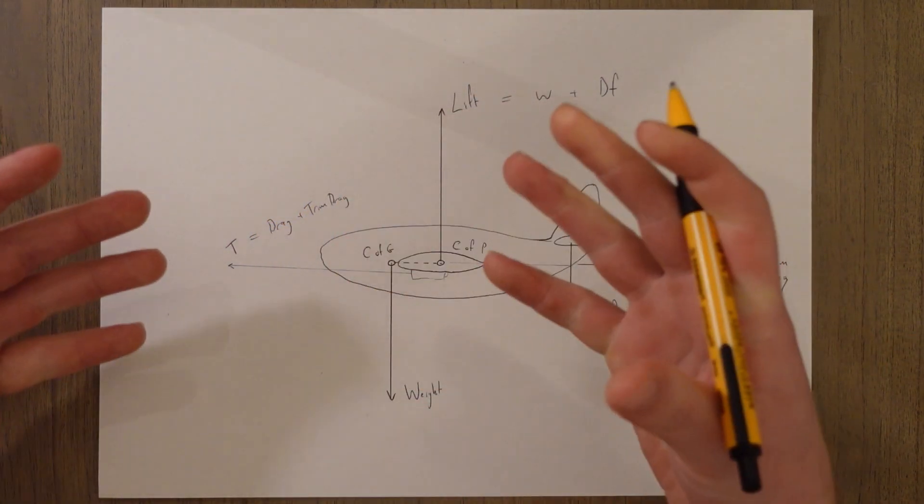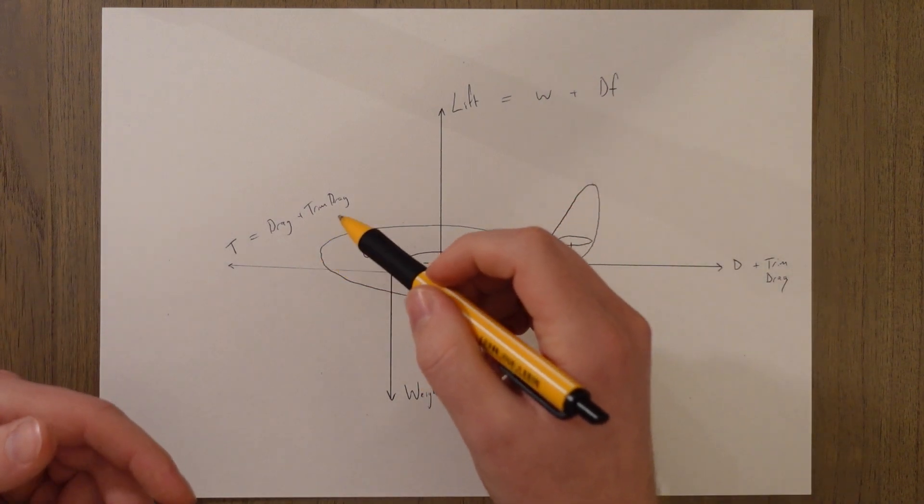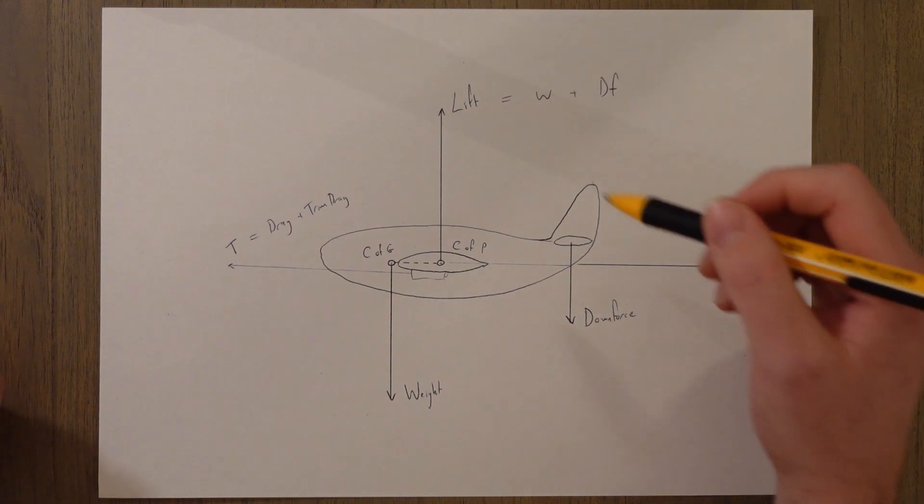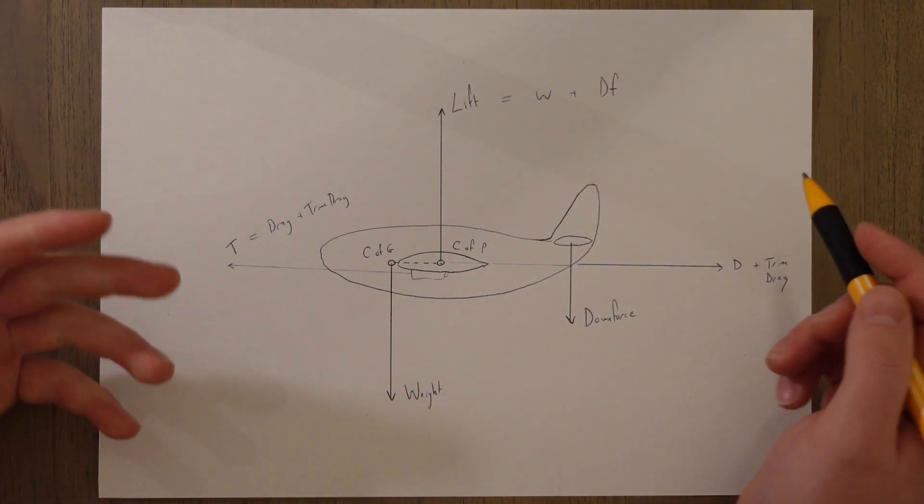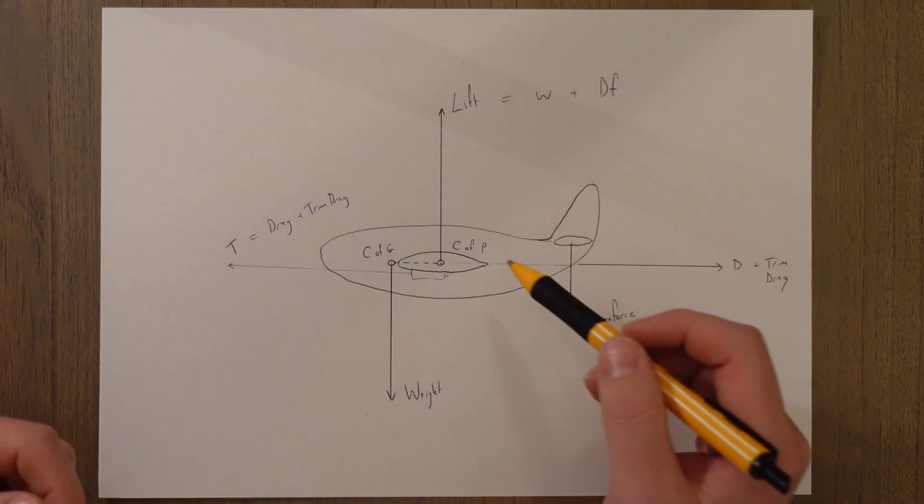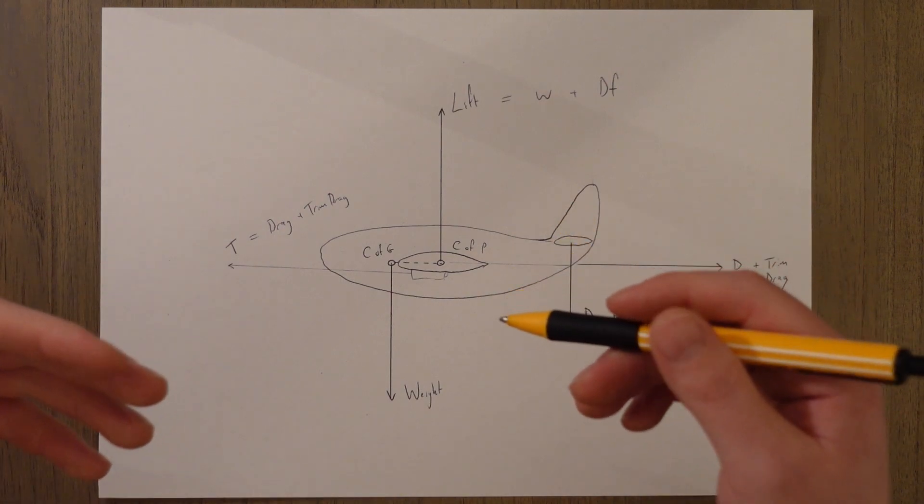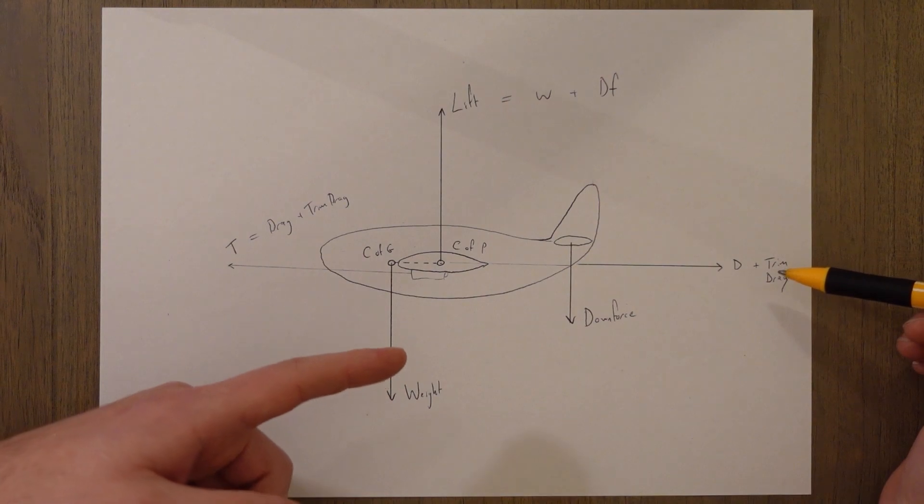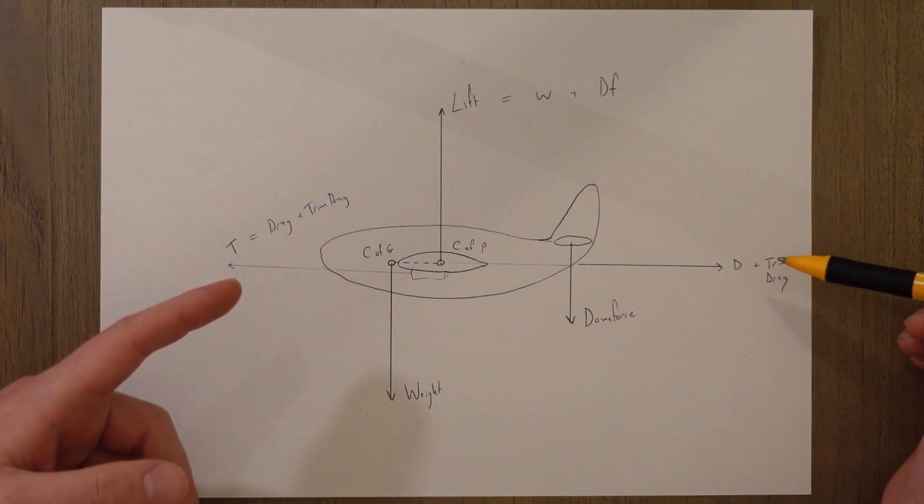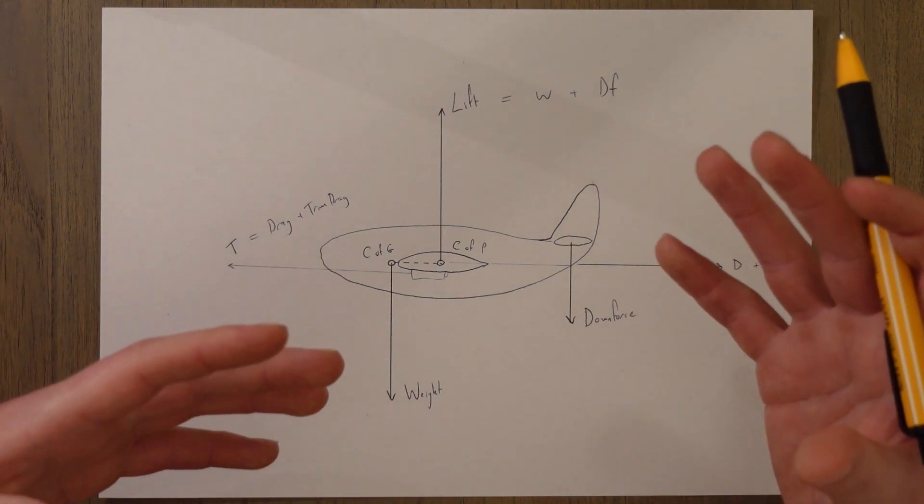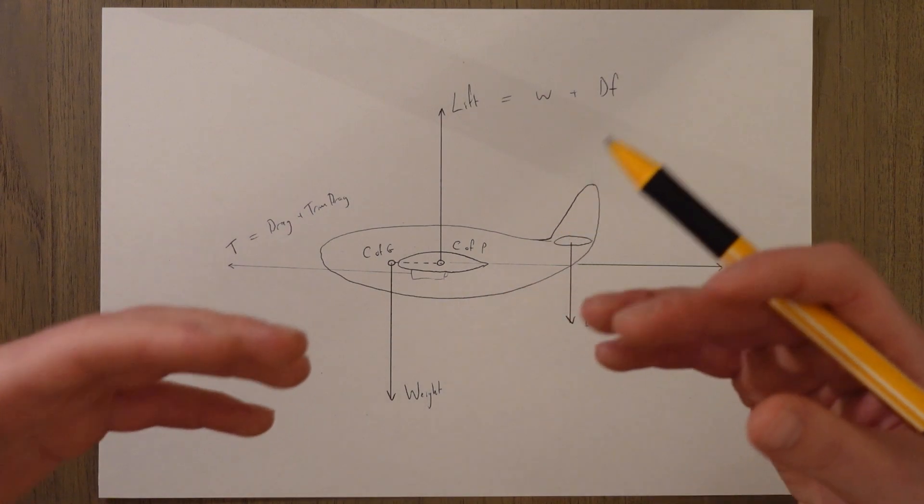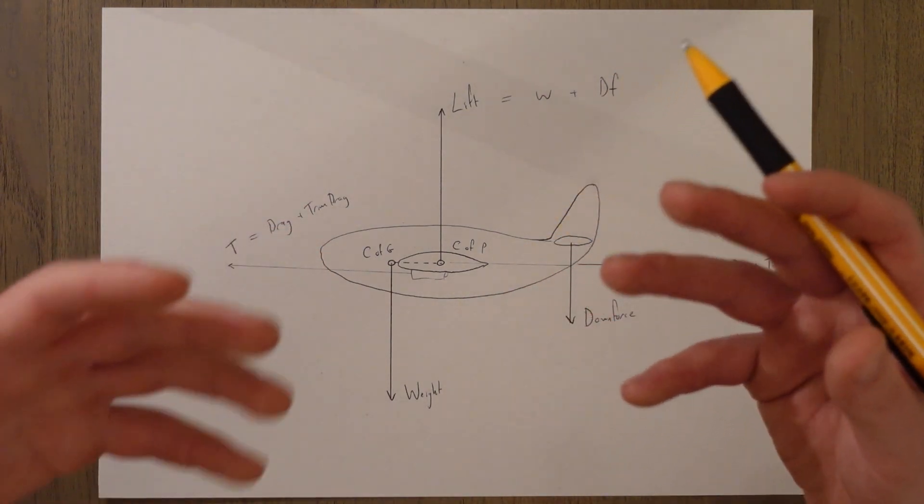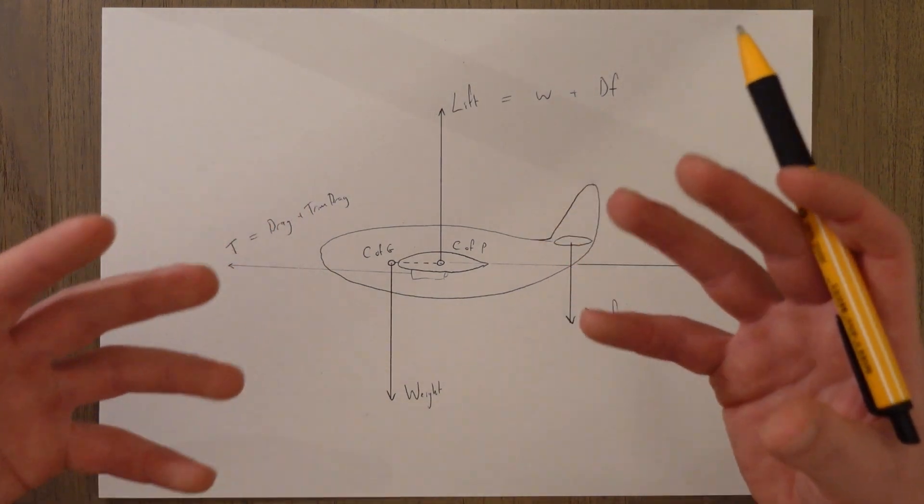By adding downforce and creating this extra trim drag, we now have to balance out this extra drag by adding more thrust. So thrust equals drag plus trim drag, which is just total drag. By having a center of gravity in front of the center of pressure, we therefore burn more fuel because we're needing to balance out this extra trim drag with more thrust. The benefits of stability outweigh the fuel burn in the designer's eyes.